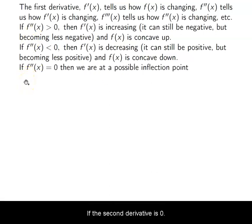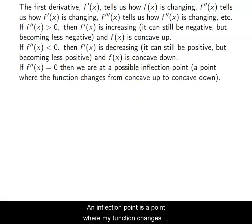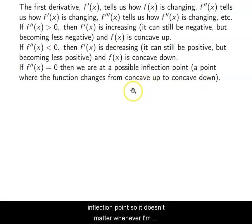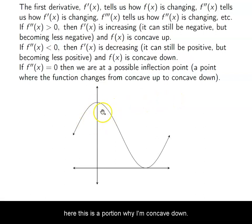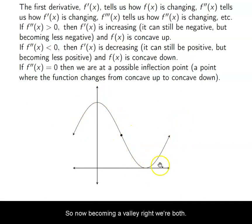If the second derivative is zero, we have what's called a possible inflection point. An inflection point is a point where my function changes from being concave up to being concave down, or vice versa — the exact moment when it changes. Here is a portion where I'm concave down; here is a portion where I'm concave up. The inflection point is the point where I go from being a hill to becoming a valley, or a bowl.